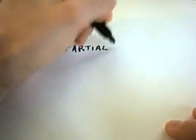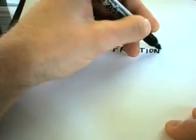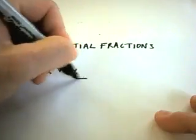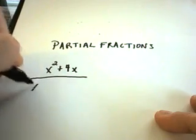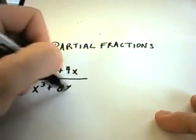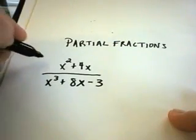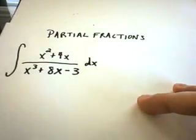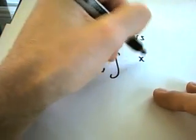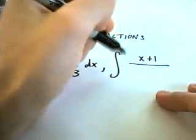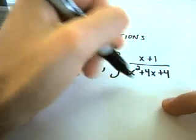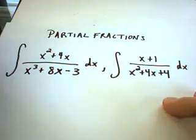Partial fractions is for integrating rational functions — polynomials over polynomials. For example, x squared plus 4x divided by x cubed plus 8x minus 3 is something we could integrate using partial fractions. Likewise, x plus 1 over x squared plus 4x plus 4 is a rational function, so partial fractions applies there as well.